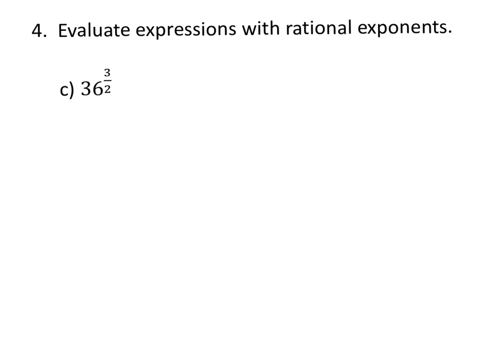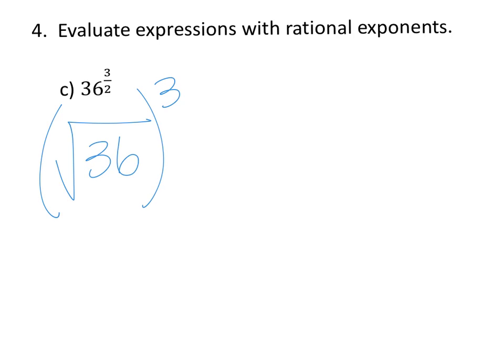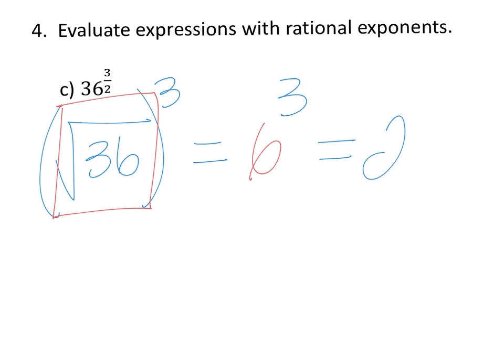Let's change this rational exponent into a radical expression. Remember that the denominator is your index and the numerator is your exponent. So we're going to write that as the square root of 36 raised to the third power. Working in the parentheses first, the square root of 36 is 6, and 6 to the third power equals 216.